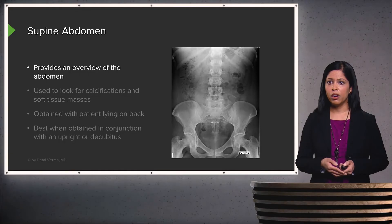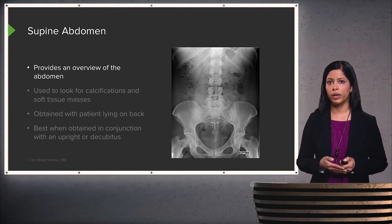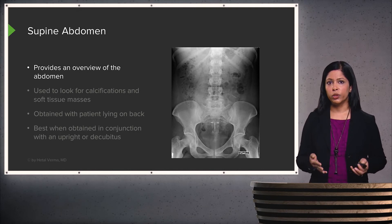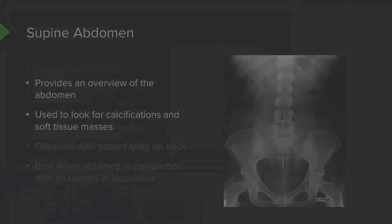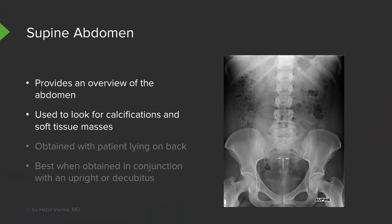The supine film is also very commonly performed, usually in addition to an upright or decubitus. It provides a general overview of the abdomen and is the view used to look for calcifications or abnormal soft tissue masses. It is obtained with the patient lying on their back, and is best used in conjunction with either the upright or the decubitus.